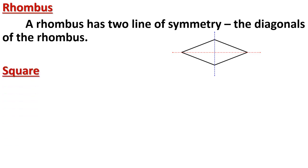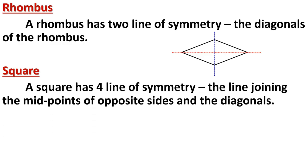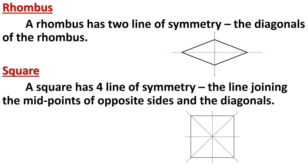In a square, all four sides are equal and all angles are 90 degrees. A square has four lines of symmetry: two are the lines joining midpoints of opposite sides (vertical and horizontal, as in a rectangle), and two are the diagonals, because folding a square diagonally also gives two equal overlapping parts.